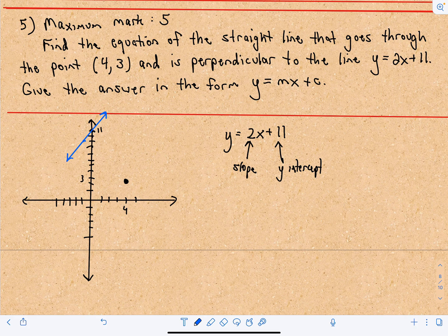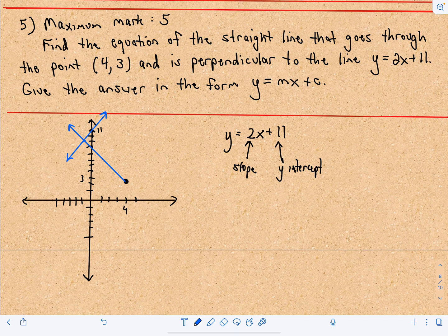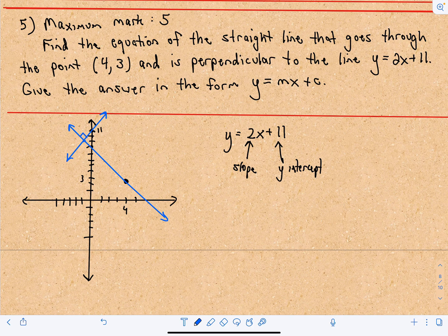So we want the line that goes through this point. And again, it's perpendicular to this other line. So I think that looks roughly perpendicular, right? So recall, perpendicular just means it's crossing at a right angle, 90 degree angle.